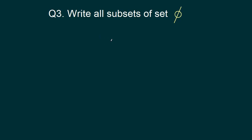Write all subsets of the set phi, or null set, or void set. The answer to this question is tricky — the answer is phi. Even though this set is a null set with no elements, phi itself is a subset of every given set, even if that set is phi. So phi is a subset of phi itself.